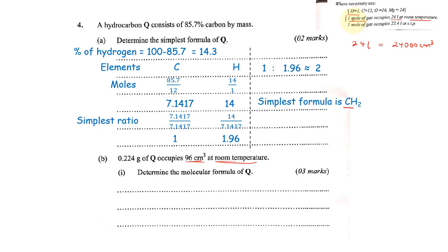I'm interested in finding one mole, the mass of one mole, because it will help me determine the molecular formula of Q. So what does that mean? It means that my 96 cubic centimeters of Q contains 0.224 grams. I need to know which mass will be present in 24,000 cubic centimeters, because I know that mass will be for one mole, which will be the molar mass of Q. So 24,000 cubic centimeters will contain 24 times 0.224 grams divided by 96. We shall get 56 grams.